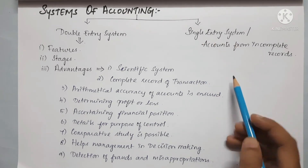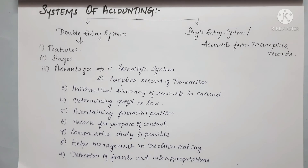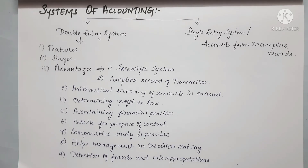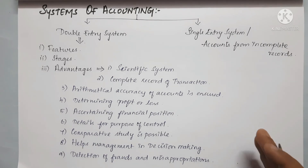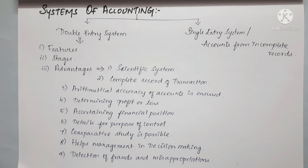Next is the Single Entry System, also known as Accounts from Incomplete Records. Unlike the Double Entry System, it does not maintain full records. In single entry, only real and personal accounts are maintained. You can maintain cash books and documents, but you cannot prepare a complete trial balance to verify accuracy.